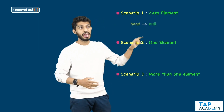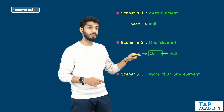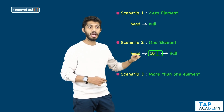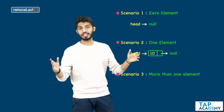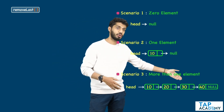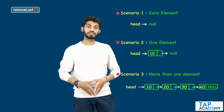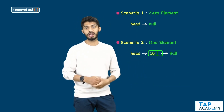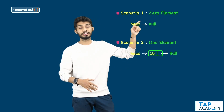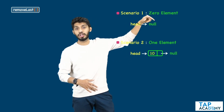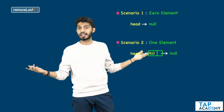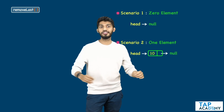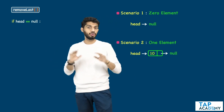When there are zero elements, head will be pointing to null. When there is one element, head will be pointing to the first — the one and only — node, and head.next will be pointing to null. So what I need to do: first, let's implement when there is 0 and when there is 1. When there are 0 elements, how do I know that? When head is pointing to null, I can clearly say there are only 0 elements. So I will do nothing — I will set the condition: if head equals null, do nothing.